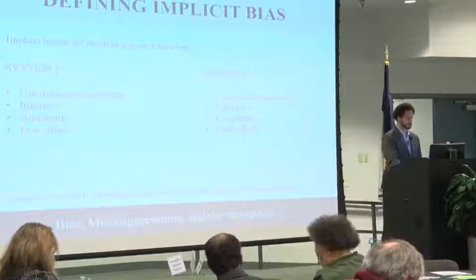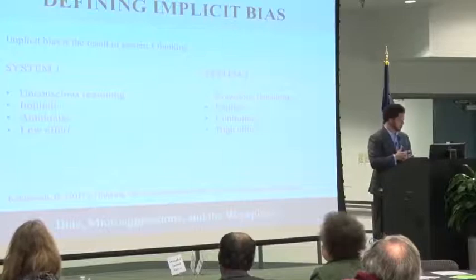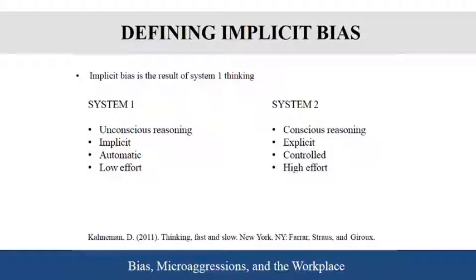The work on implicit bias talks about two different types of thinking. There's a book called Thinking Fast and Slow — a great book to read. It talks about the difference between being a System One thinker or a System Two thinker. In reality, we're all both, and we transition back and forth depending upon the context.